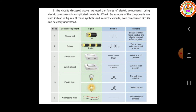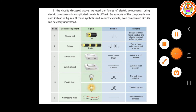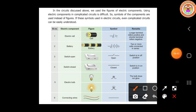Let me discuss about another instrument which is the ammeter. A meter is an instrument used to measure electric current in the given circuit. It is used in electric circuits to find the quantity of current flowing through the circuit. This is to be connected in series.